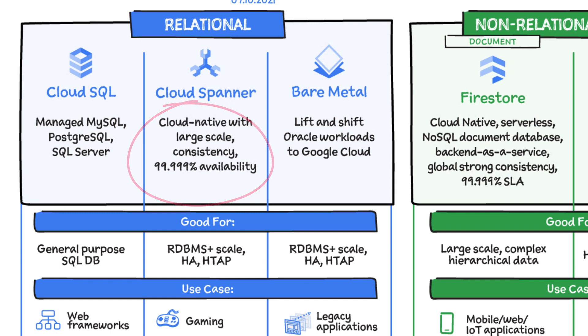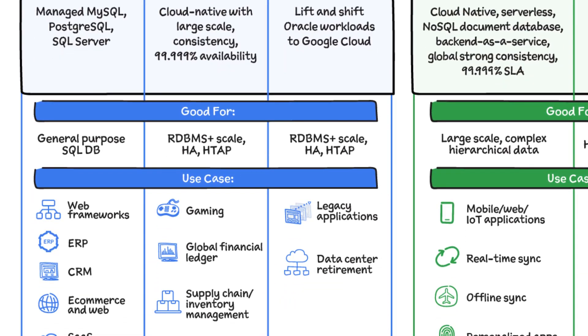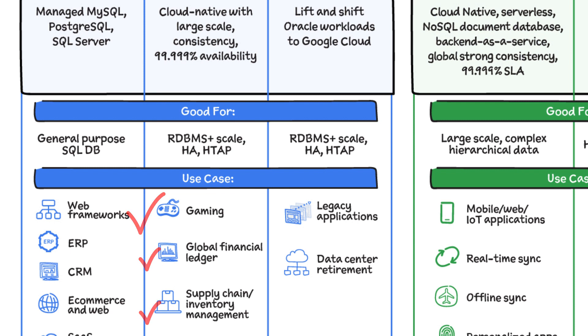It is a unique database. It combines transactions, SQL queries, and relational structure with the scalability that you typically associate with a non-relational or a NoSQL database. For these reasons, Spanner is best used for large-scale applications such as gaming or global financial ledgers, supply chain, retail, and inventory. Think global and really big applications when you think about Spanner.